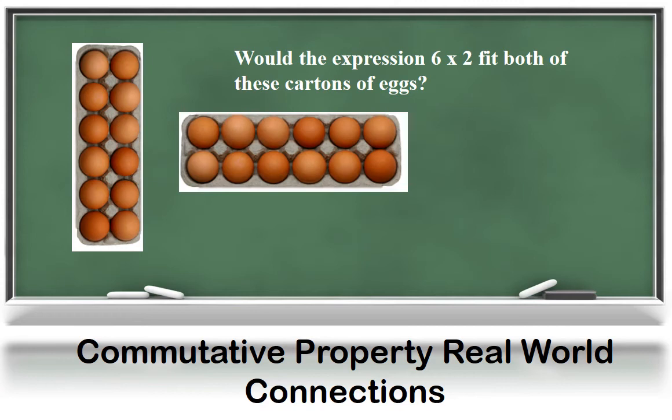To help your child see math in the real world, you could look for arrays like the cartons of eggs. Turn the carton and ask: did I model the same multiplication problem or a different one? Will I get the same product? This will help your child see that you didn't change the amount of eggs. You could also ask: does the expression six groups of two fit both of these cartons of eggs? You would want your child to realize that though the expression is not the same for both pictures, I would still get the same product or result.